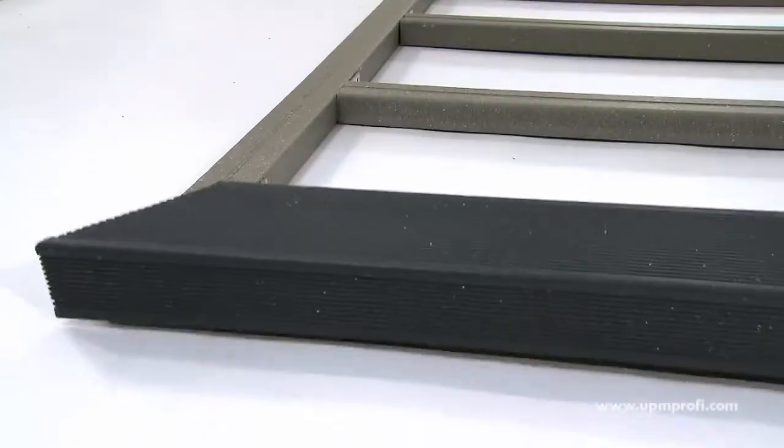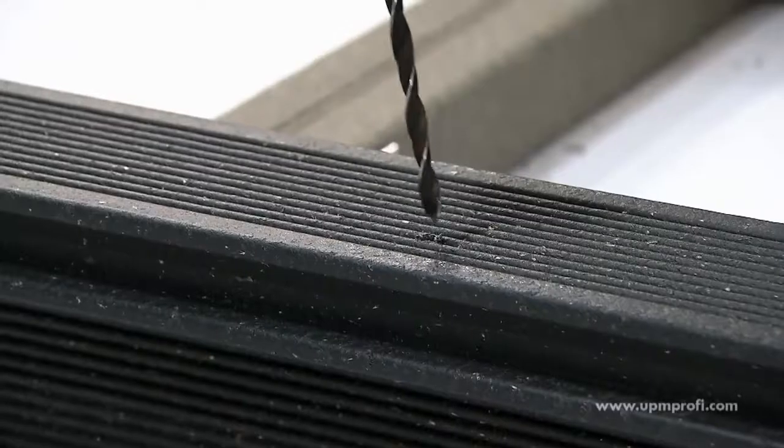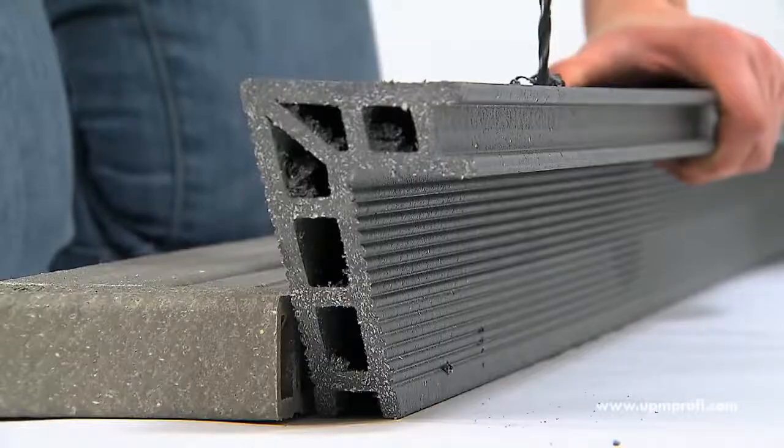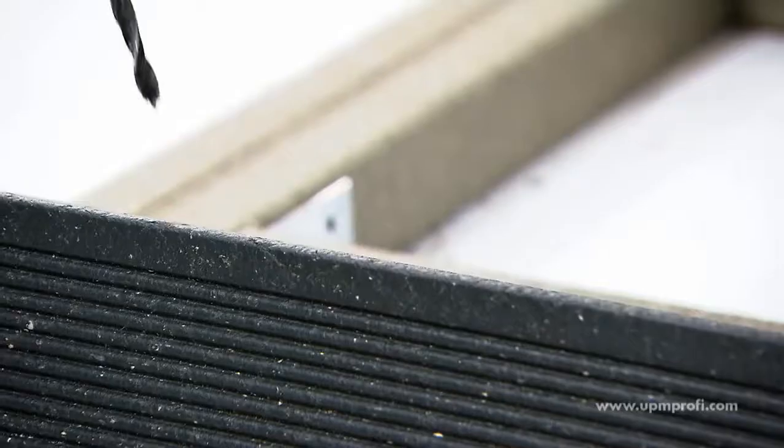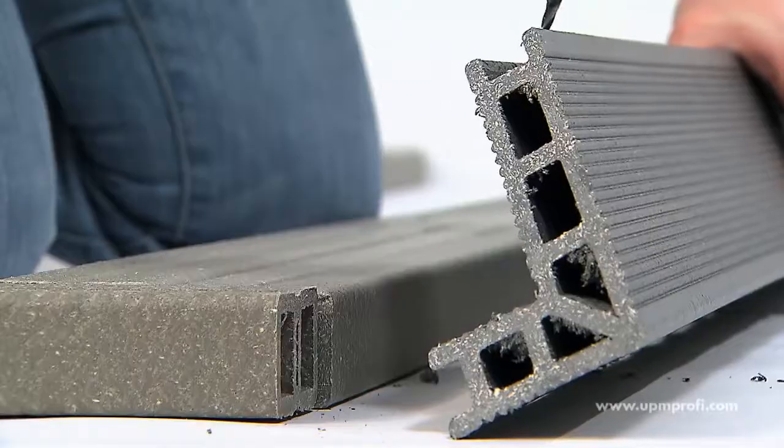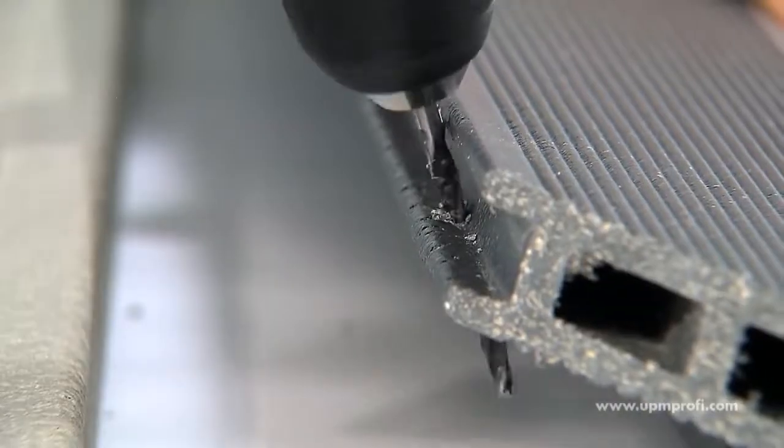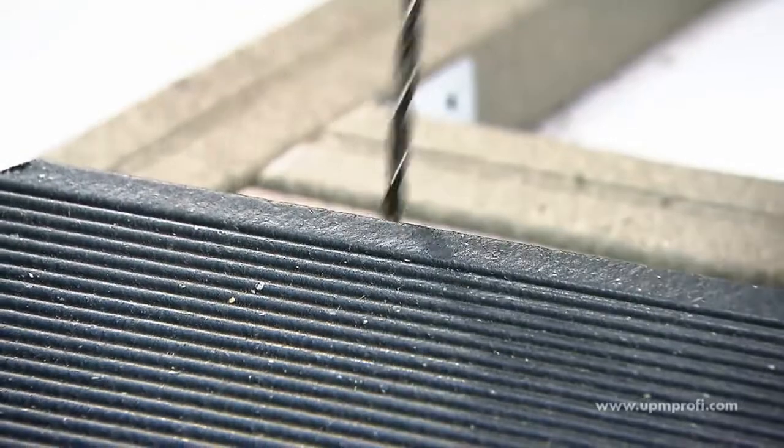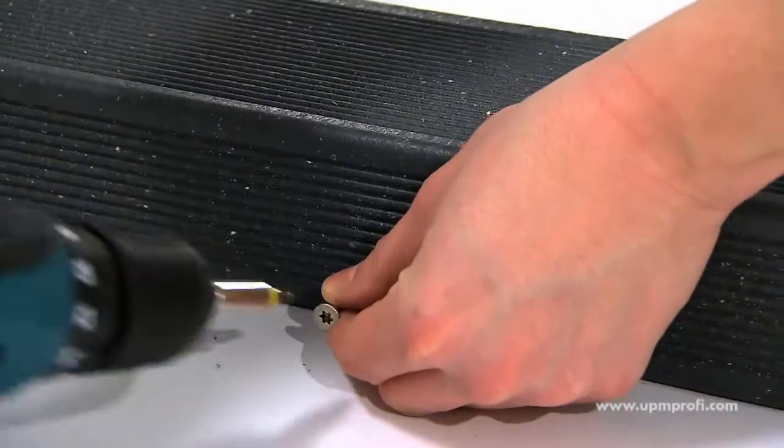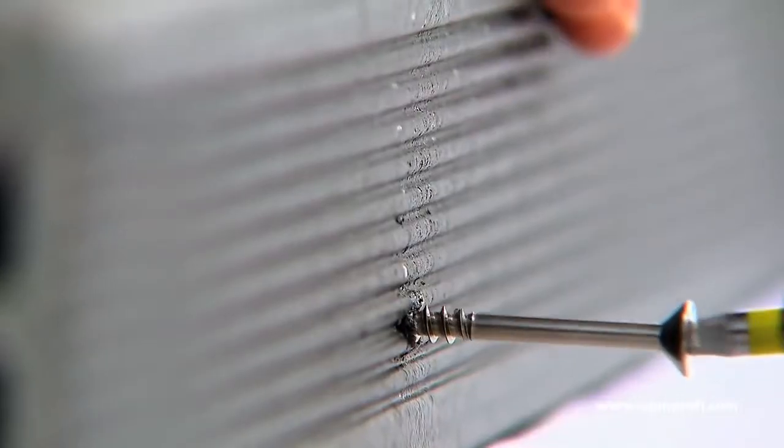When fixing the rail step, oval holes should be pre-drilled in the face and lower tongue to allow for thermal expansion. This is achieved by moving the drill bit inside the hole from side to side. The spacing between the holes should not be more than 60 centimeters.